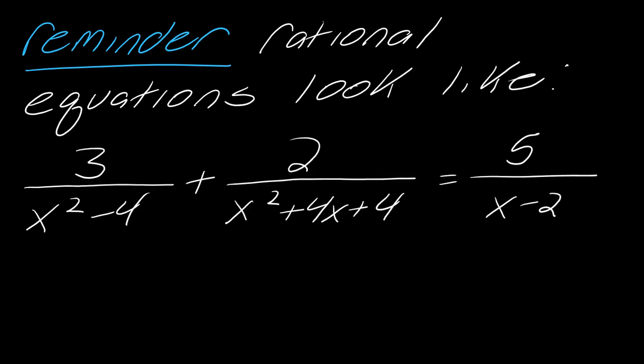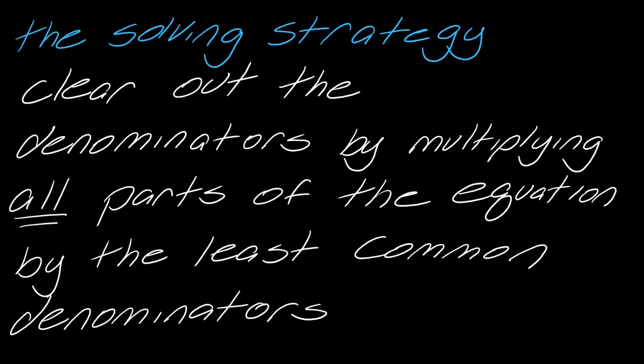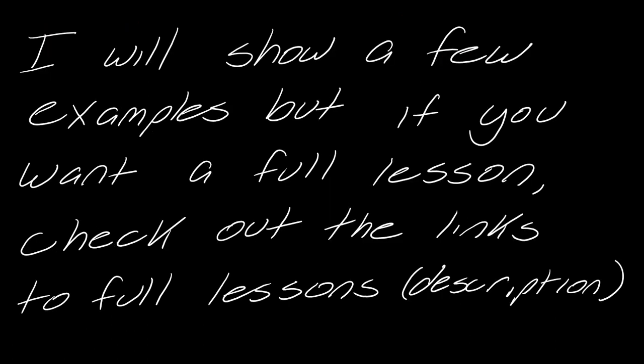So it could look like this or like this — you get the idea. The solving strategy is to clear out all the denominators by multiplying all parts of the equation by the least common denominator. I'll show a few examples.